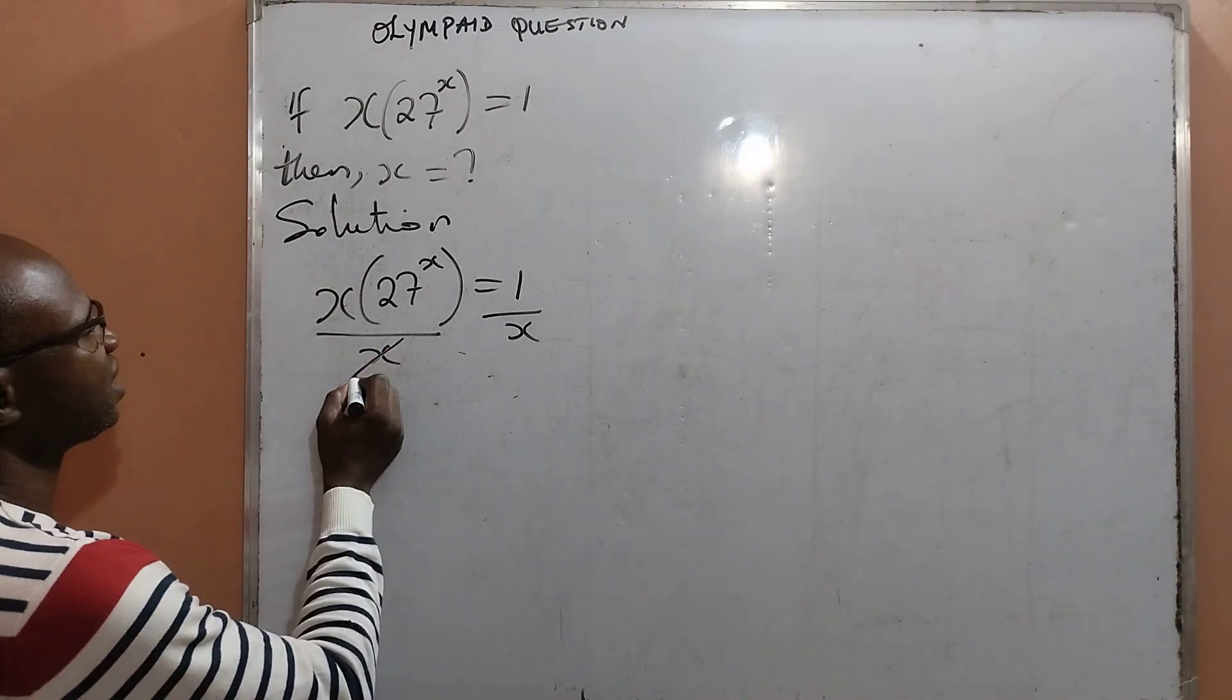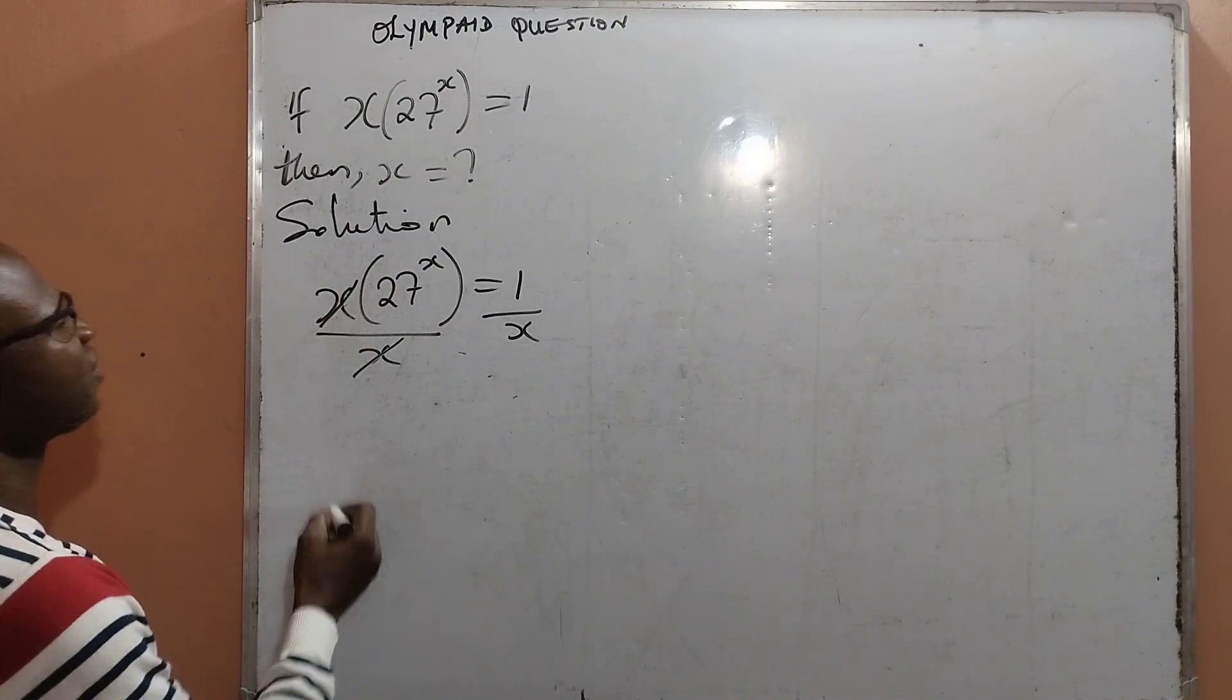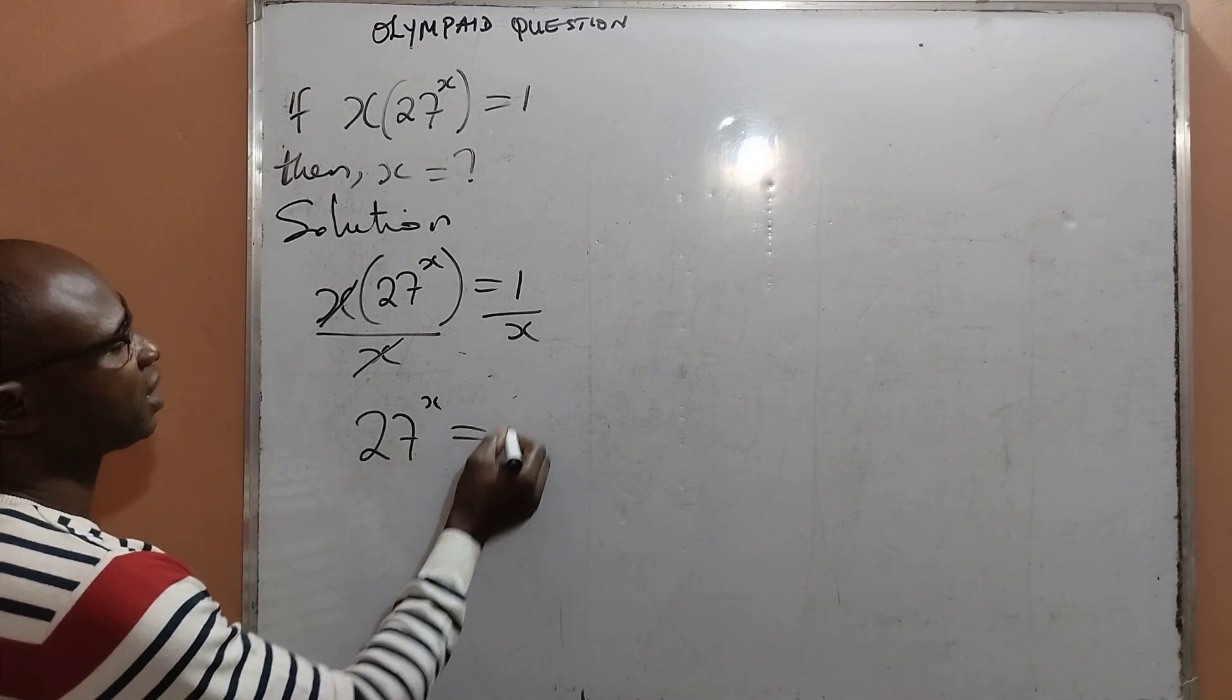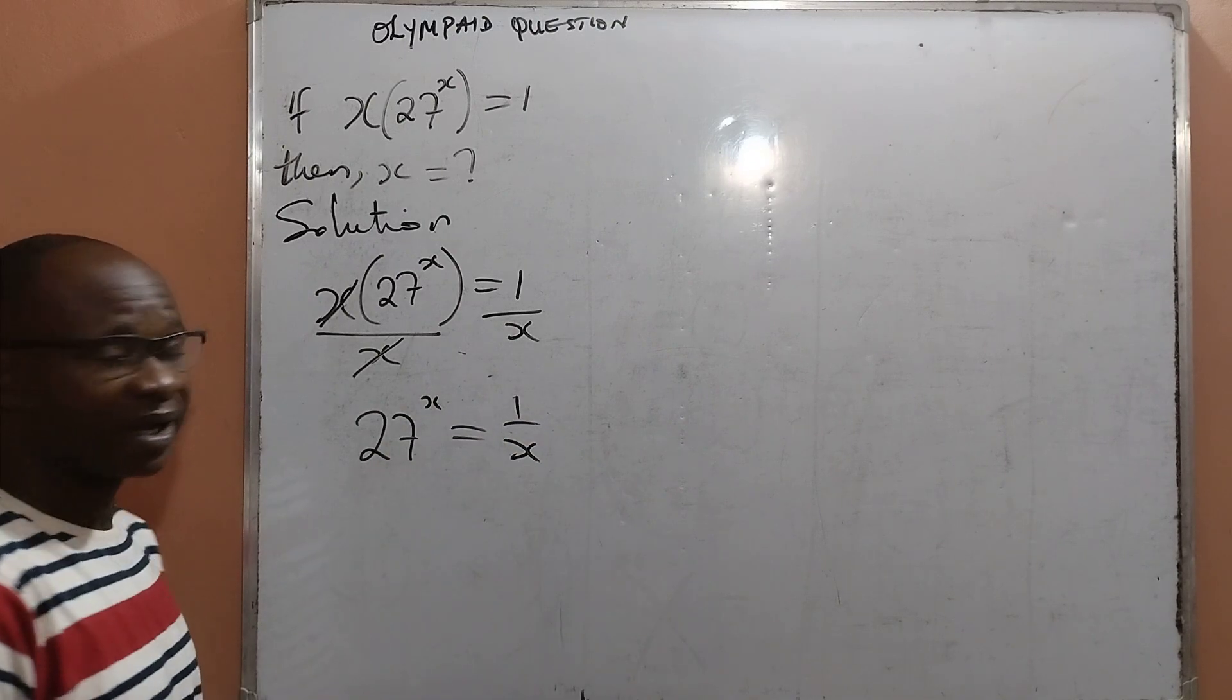By doing this, the denominator will cancel the numerator from the left, leaving me with 27 raised to the power x equal to 1 all over x.